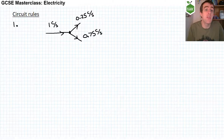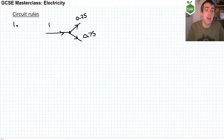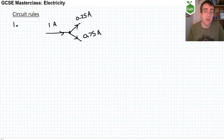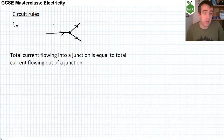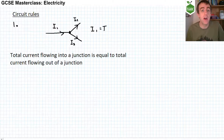One coulomb per second is an ampere, so we can say a current of one ampere entering a junction equals 0.25 amperes plus 0.75 amperes leaving. To summarise: the current flowing into a junction is equal to the current flowing out of a junction. Symbolically, I1 equals I2 plus I3.